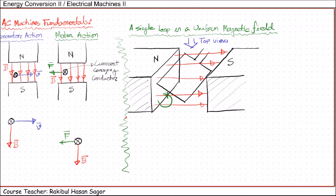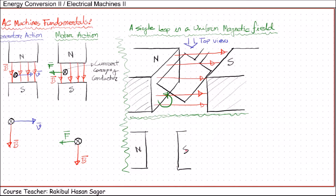So this is the top view and this is the side view. Let us draw the top view first. We have north pole here and south pole on the other side. The loop will look like this. If we denote the different corners as A, B, C, and D, the induced EMF from A to B can be named as E_BA, and the induced EMF from C to D can be named as E_DC.